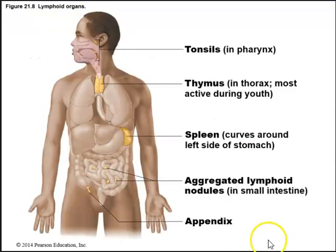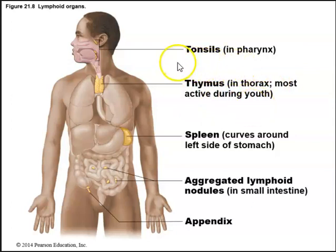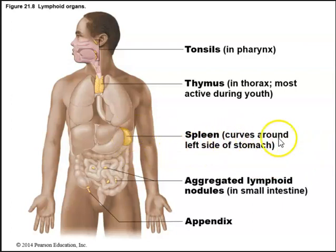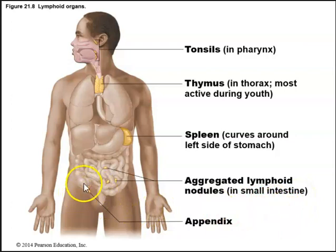The thymus is a primary lymphoid organ located in the thorax and is most active during youth. Secondary lymphoid organs include the tonsils in the pharynx, the spleen in the left upper quadrant curving around the left side of the stomach, aggregated lymphoid nodules called Peyer's patches located in the small intestine, and the appendix, which is also a lymphoid organ.